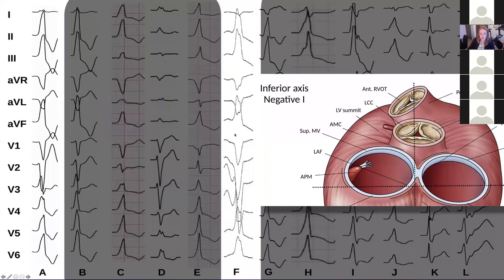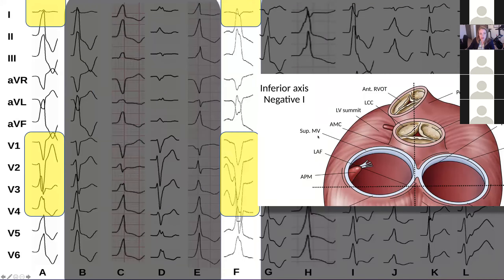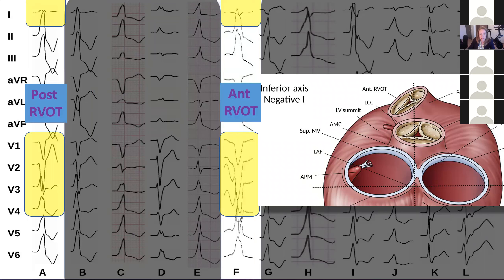Again, an inferiorly directed left bundle PVC, but this one has a very late transition. We can compare that to the RVOT PVC we saw in the earlier panel. We're seeing much more negativity up here — probably hidden underneath the zoom controls — but much more negativity in lead one at a very late transition. And that's going to be your anterior RVOT.